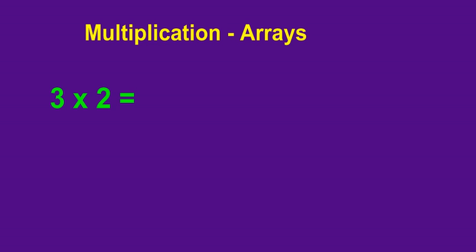One way of solving a multiplication question is by using an array of rows and columns. If we have the question 3 times 2, we can think of this as 3 rows by 2 columns.